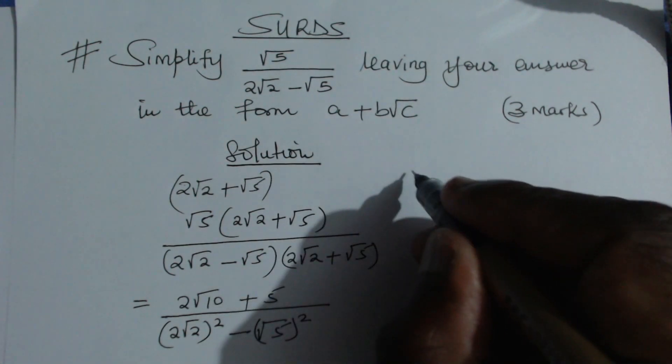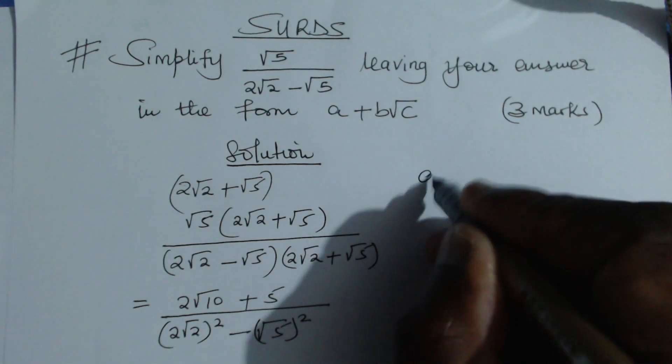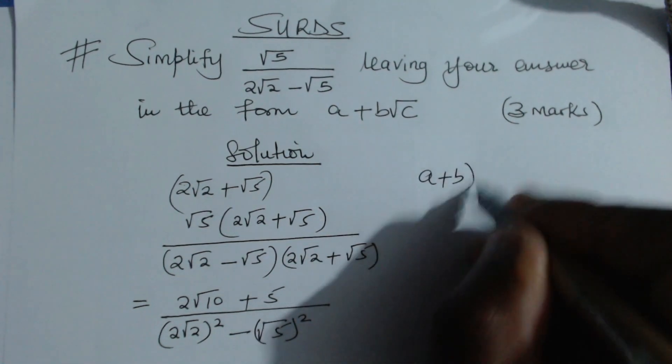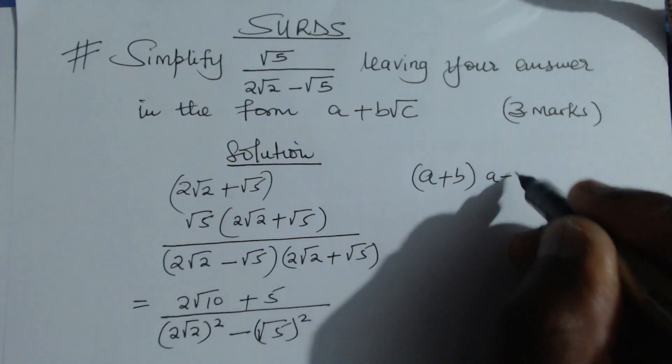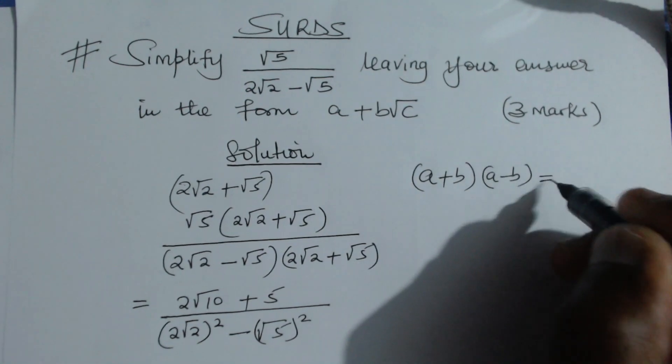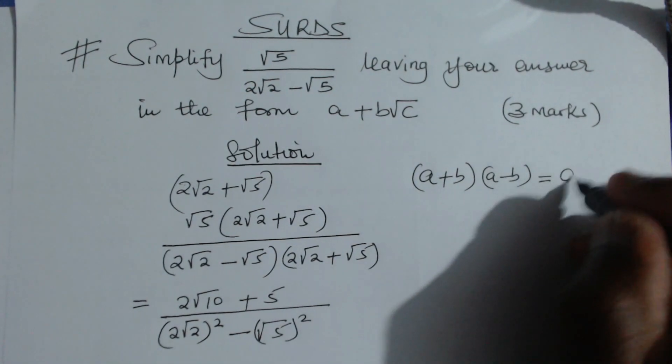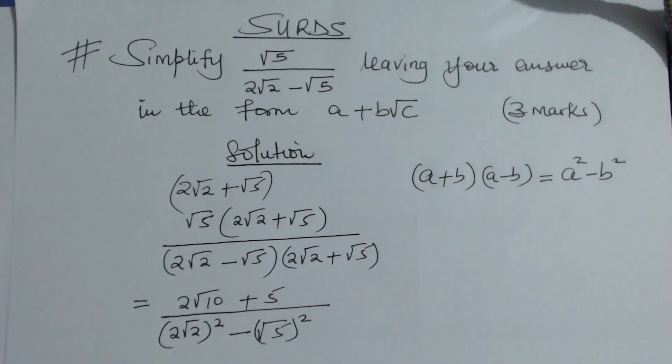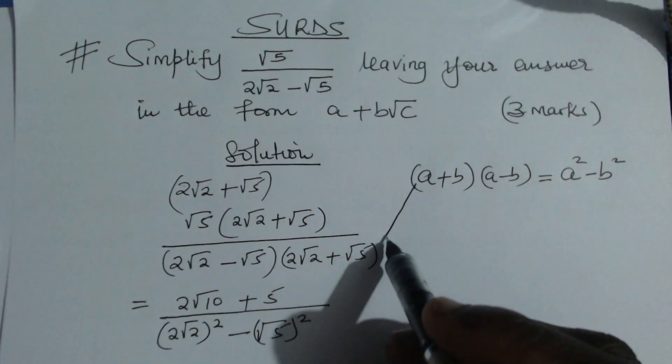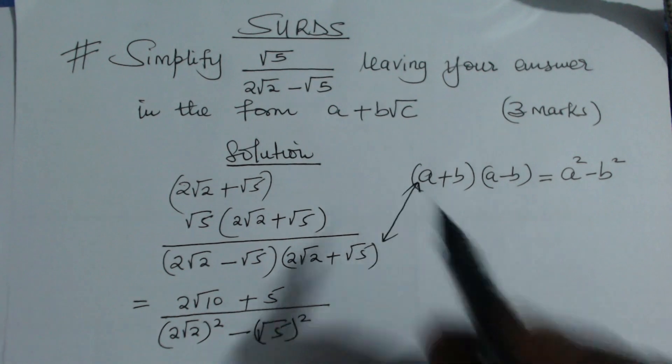When you're given, for example, (a + b) multiply by (a - b), when you expand this, because this is the difference of two squares, you get a² - b². So if you compare what we have here...